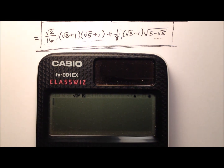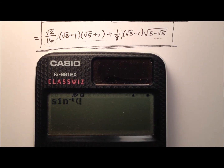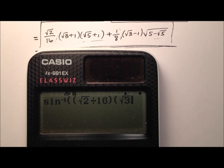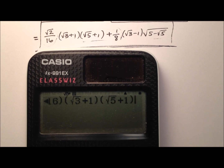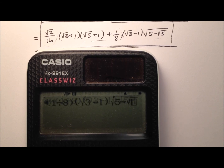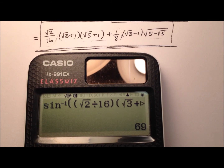Here's our calculator. We're going to do inverse sine and plug this entire expression in to see if it gives us 69 degrees. We start with the square root of 2 divided by 16, multiply that by the square root of 3 plus 1, and multiply that by the square root of 5 plus 1. To that we add 1 eighth times the square root of 3 minus 1 times the remaining square root expression. Closing all the parentheses — yes, indeed we do get 69 degrees.